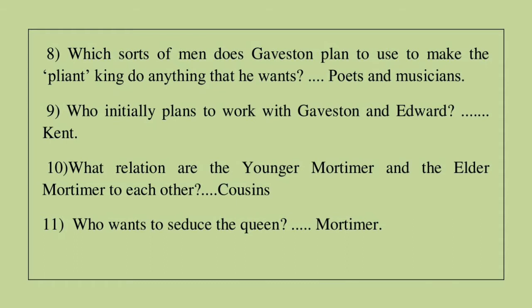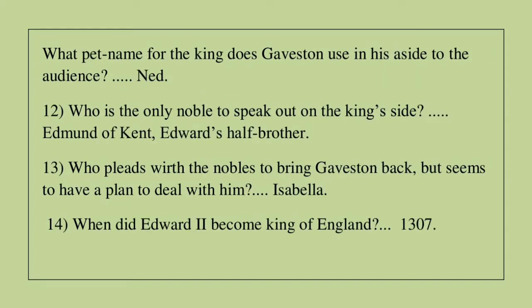Question 9: Who initially plans to work with Gaveston and Edward? The answer is Kent. Question 10: What relation are the younger Mortimer and the elder Mortimer to each other? The answer is cousins. Question 11: Who wants to seduce the queen? The answer is Mortimer.